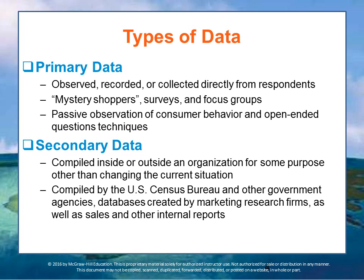There are two types of data available for decision makers within the marketing organization to implement the marketing concept. Primary data are observed, recorded, or collected directly from respondents — that is, potential customers. Primary data must be gathered by researchers who develop a method to observe phenomena or research respondents. Many companies use mystery shoppers, for example, to visit their retail establishments and report on whether stores are adhering to the company's standards of service.